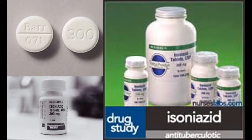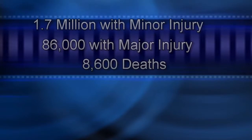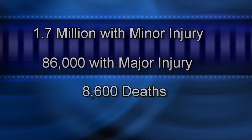The drug is isoniazid. These numbers may not seem like much, but if everyone reported by the World Health Organization as infected with tuberculosis in 2012 were able to take the medication, up to 1.7 million people would have had minor liver injury, 86,000 would have had major injury, and 8,600 people would have died.